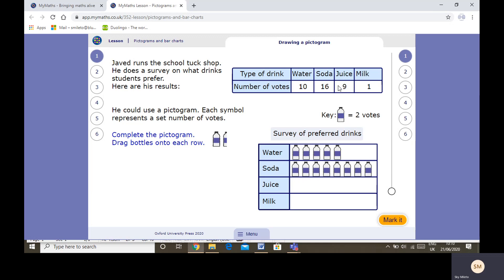Juice. Nine people like juice, so that would be 2, 4, 6, 8. Now, as you can see here, we have half a bottle. If we know that a whole bottle is two votes, we also know that half a bottle is one vote. And therefore milk, which only has one vote, would have half a bottle.